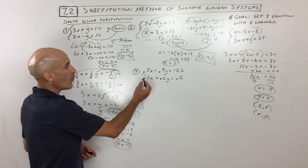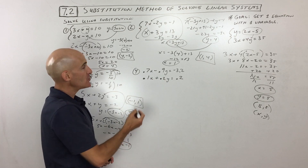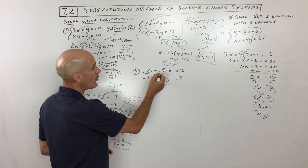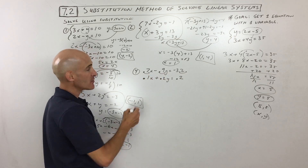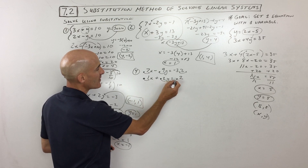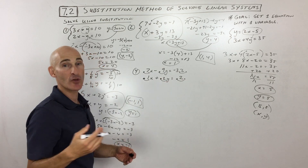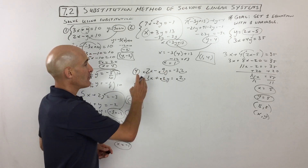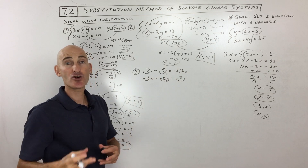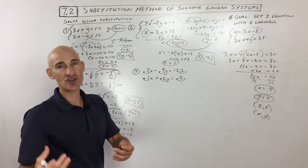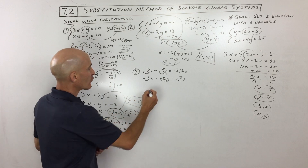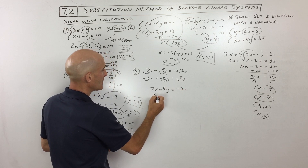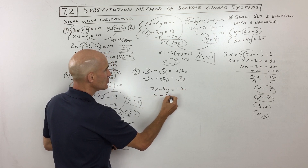For number 4, what I would do is clear the decimals. The way you do that is multiply everything by 10 — it moves the decimal point one place to the right, as you remember from pre-algebra. If you multiply by 100, it moves two places; 1,000 moves three places. The key is you want to do the same thing to each of the terms in the equation, otherwise it'll change the equation. So doing that, we end up with 7x minus 9y equals negative 32, and 1x plus 2y equals 2.